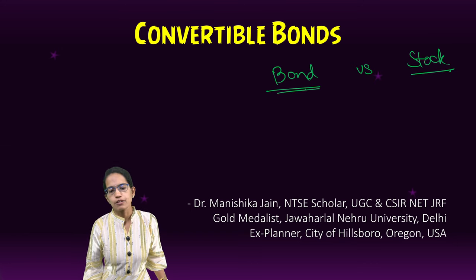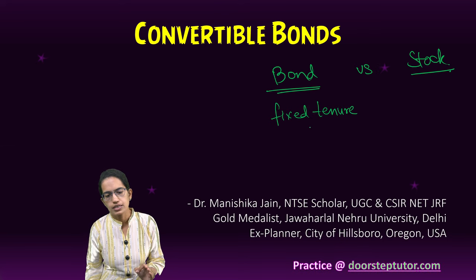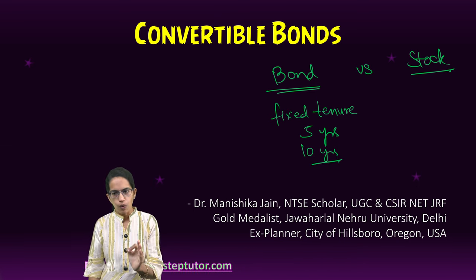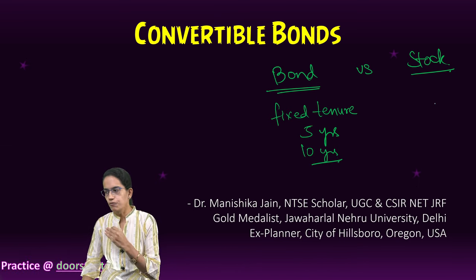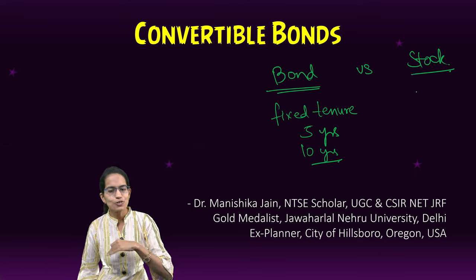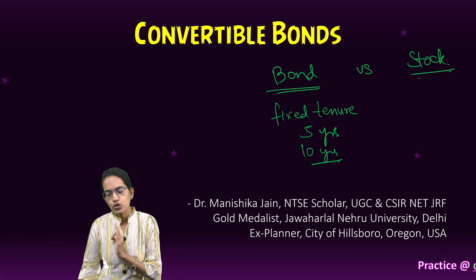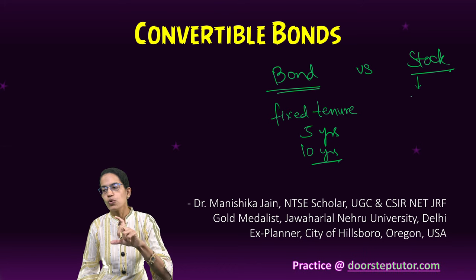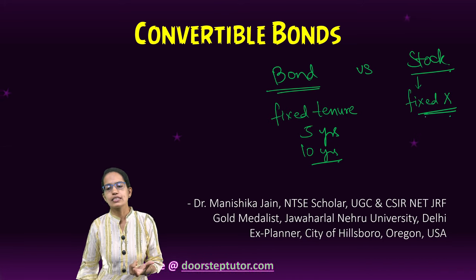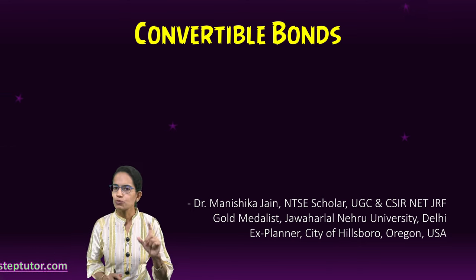A bond is there where you are committed for a fixed tenure. It could be 5 years, 10 years, 3 years — whatever is your commitment time frame. The stock, on the other hand, if it appreciates in value you can sell it at any point in time. Stocks do not provide fixed interest, whereas in the case of a bond there is a fixed interest. So this is a basic difference between bond and stock.